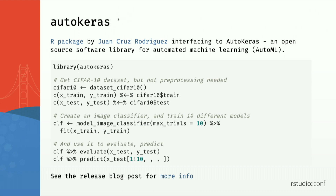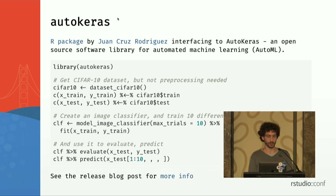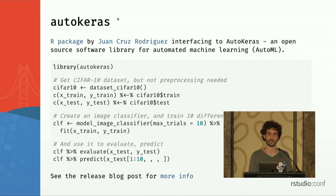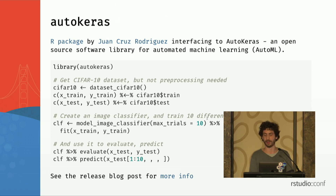There is AutoKeras, a package by Juan Cruz, which interfaces R to the AutoKeras Python package. It does AutoML — using automated machine learning techniques to build machine learning models. So instead of defining all your Keras layers and how they are connected, you can just use a model image classifier, specify how many different models you want to try, and it will find a good model for your dataset.